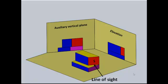Here we can see the line of sight that we had for our auxiliary elevation. We can also see the new X1, Y1 line which is the new ground line for the auxiliary elevation.